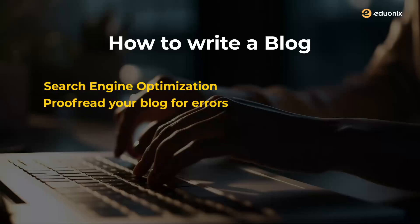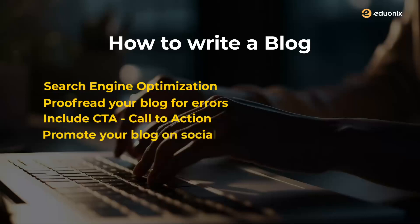Proofread your blog, check for grammatical issues and sentence construction issues. Do not proofread it immediately — first read the blog and then proofread it. Finally, you need to include a call to action, and you also need to promote your blog on social media and on relevant platforms. That is basically how you write a blog in simple words.